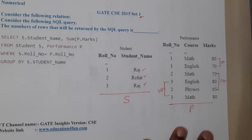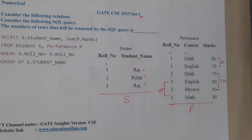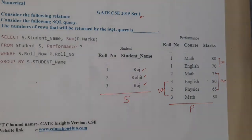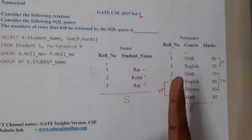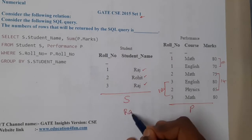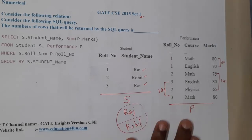Here there is an important issue: when we perform GROUP BY student_name, if you observe carefully, there are two students named Raj and one student named Rohit. So once we combine the tables, both students named Raj will be treated as a single person. After grouping, we get only one group for Raj and one group for Rohit.